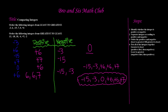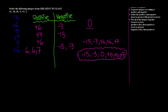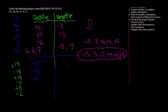Our second example: order the following integers from greatest to least. We'll do the same steps. First we identify: 13 is positive since it has no sign. Negative 18. Positive 18. Negative 4. Positive 5. And negative 2. Now we separate them: positives are 13, 18, and 5. Negatives are negative 18, negative 4, and negative 2.